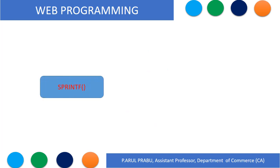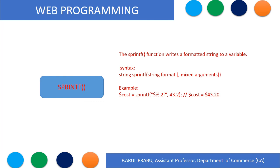The printf function writes a formatted string to output. The sprintf function also writes a formatted string to a variable. For example: the cost equals sprintf('%s to a', 43.2) — the output shows 43.2.